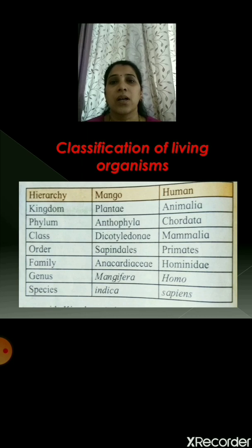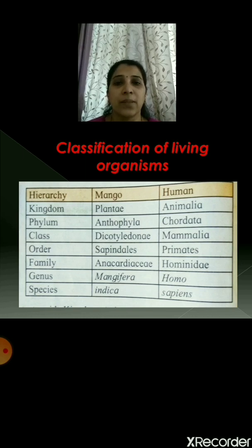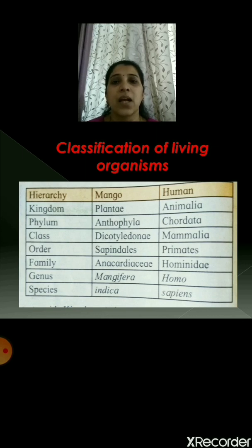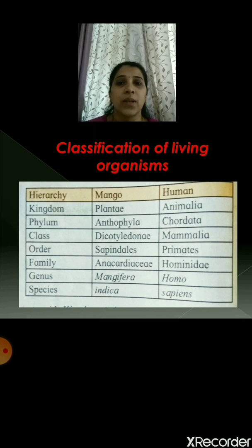Let us look at this picture wherein the hierarchy is given, with examples of mango and human. The hierarchy starts with the kingdom. Mango belongs to kingdom Plantae, phylum Anthophyta, class Dicotyledon, order Sapindales, family Anacardiaceae, genus Mangifera, and species indica.